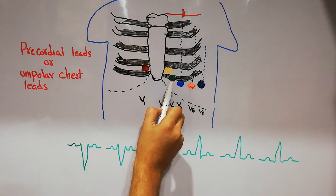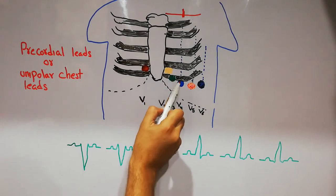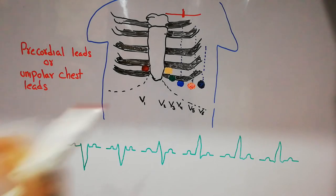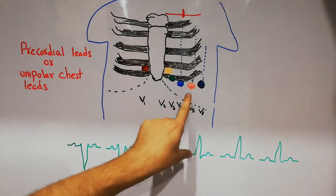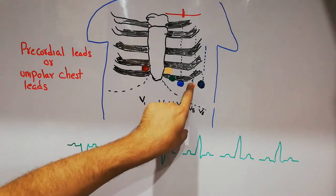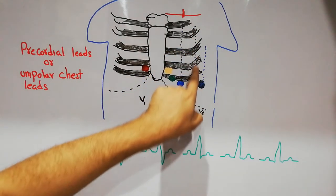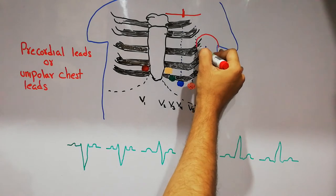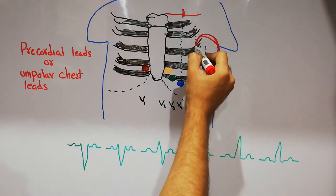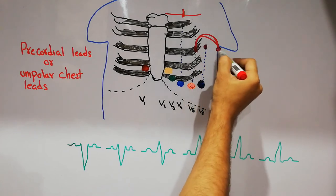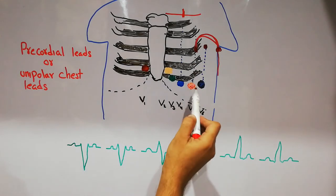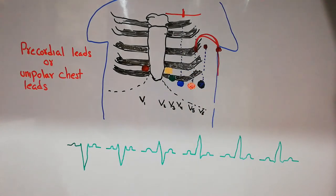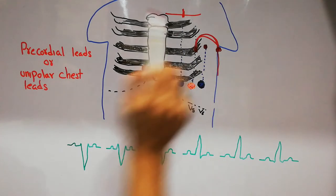The third chest lead, V3, is present somewhere between V2 and V4. V3 is attached to a green colored lead while V4 is attached to a blue colored lead. The fifth chest lead, V5, is present in the fifth intercostal space on the anterior axillary line. If we have the axilla here, the anterior axillary line is in front, followed by the mid axillary line and the posterior axillary line.